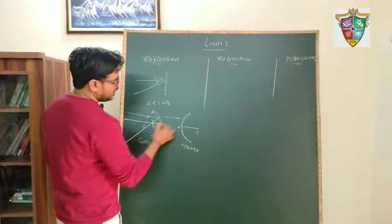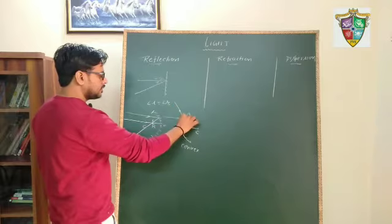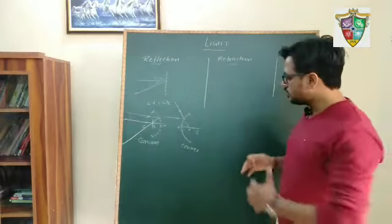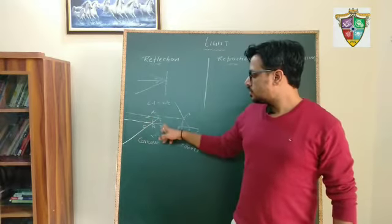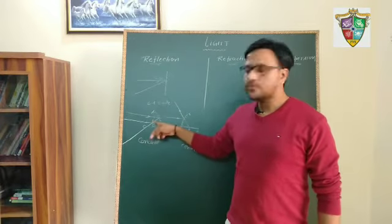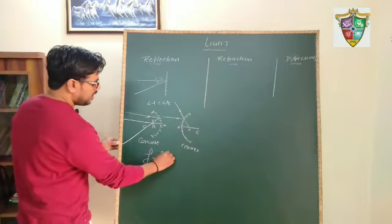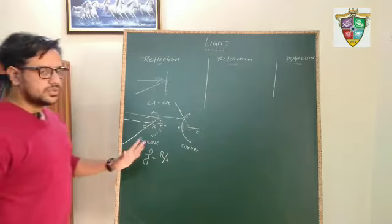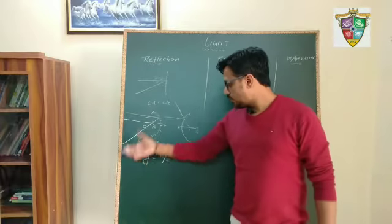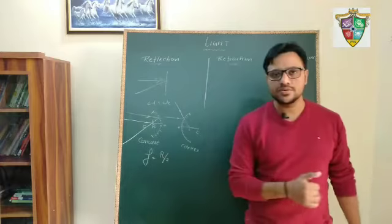In this mirror, if we take a ray parallel to the principal axis, it will seem to pass through the focus. So this is the principal focus. All lengths are measured from the pole. PC is known as the radius of curvature. The distance from P to F is known as the focal length. The relation between focal length and radius of curvature is: focal length is always half of the radius of curvature, F = R/2. There can be numericals on this formula — if radius of curvature is given, focal length is always half of it.